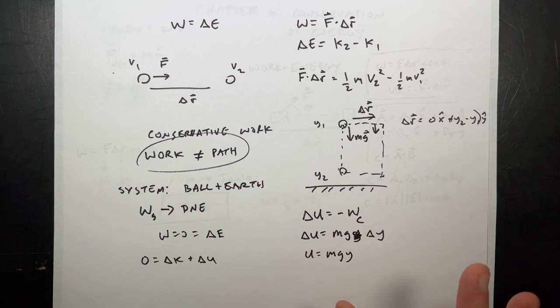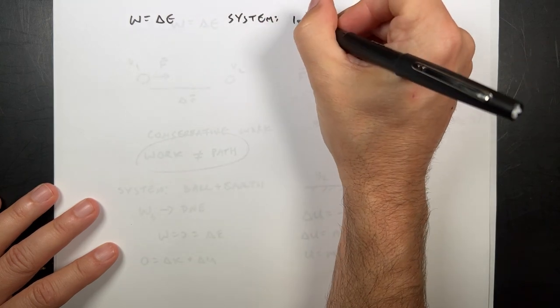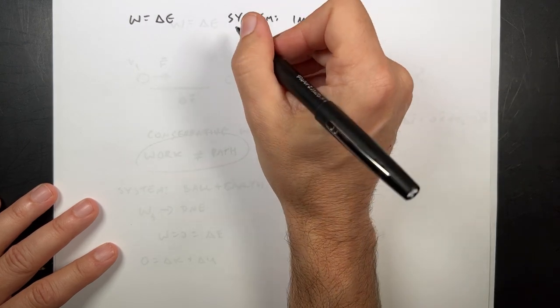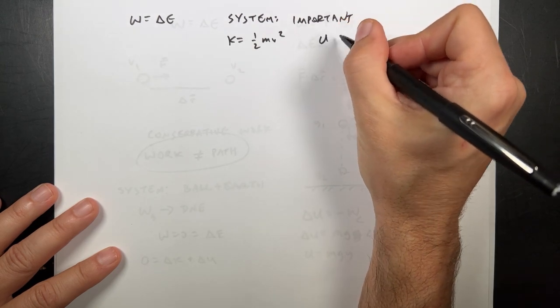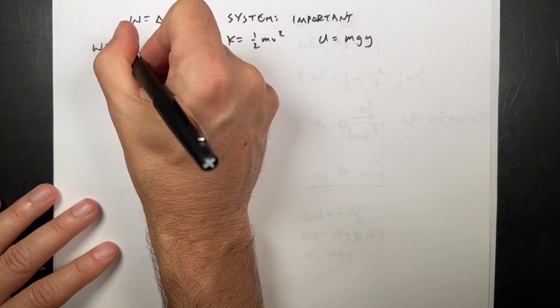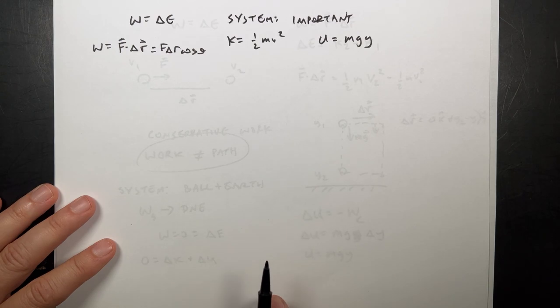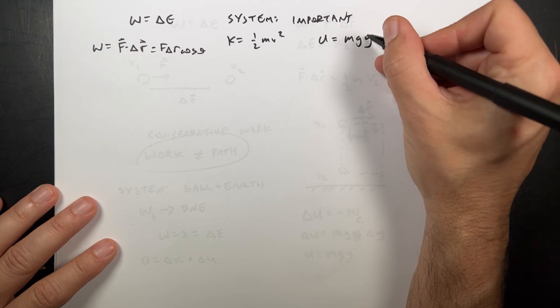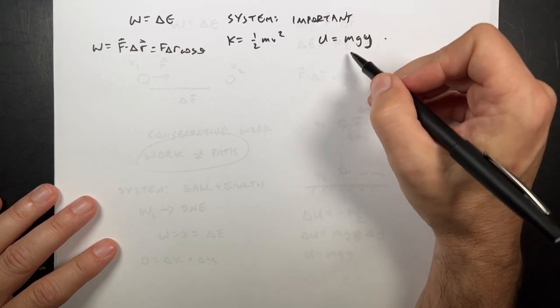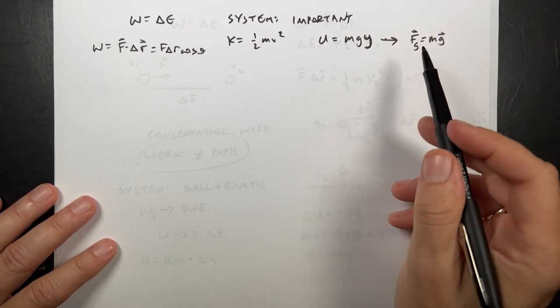This is just a review and reminder. So: work equals change in energy; kinetic energy is one-half M V squared; gravitational potential energy is MGY; work is F dot delta R equals F delta R cosine theta. The MGY potential comes from the gravitational force F_G equals MG. But what if I have a planet and an object far away? The real gravitational force magnitude is G M1 M2 over R squared — that's the actual gravitational force, and MGY is just an approximation of it.